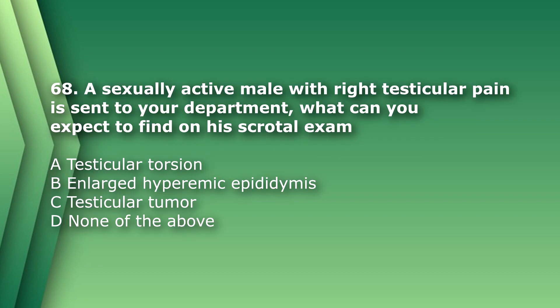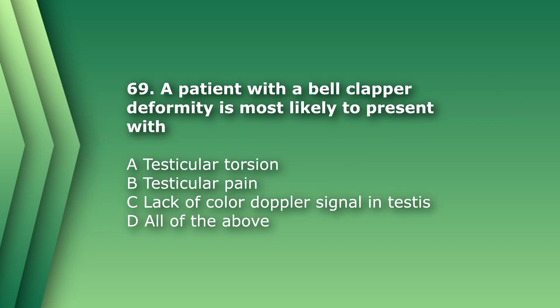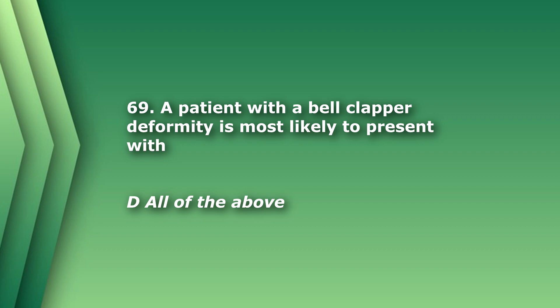Question 68: A sexually active male with right testicular pain is sent to your department — what can you expect to find on his scrotal exam? A) testicular torsion, B) enlarged hyperemic epididymis, C) testicular tumor, D) none of the above. The answer is B, enlarged hyperemic epididymis — the patient has epididymitis. Question 69: A patient with bell clapper deformity is most likely to present with: A) testicular torsion, B) testicular pain, C) lack of color Doppler signal in the testis, D) all of the above. The answer is D — bell clapper deformity is when the tunica vaginalis attaches high in the inguinal area, allowing the testicle to move freely and easily twist, predisposing the patient to testicular torsion.